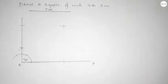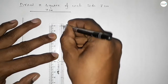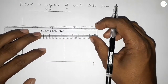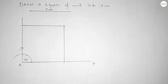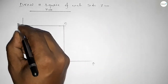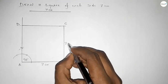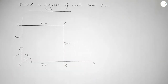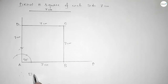Now first joining this side, then joining this side to get the square. Taking point B here, point C here, and point D at this end. This is 7 centimeters, this is 7 centimeters, this is 7 centimeters, and this is also 7 centimeters. Therefore rectangle ABCD is our square.